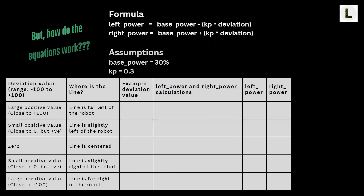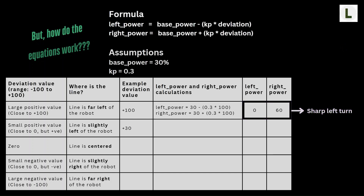In the first example, deviation is plus 100. Left power is 0 and right power is 60, meaning the robot makes a sharp left turn. This makes sense because with deviation of plus 100, the line is far left of the robot, so it needs to turn sharp left to get back on track. In the second example, deviation is plus 30. Left power is 21 and right power is 39 — close to the base power of 30 — indicating a gentle left turn, since the robot is slightly left of the line.